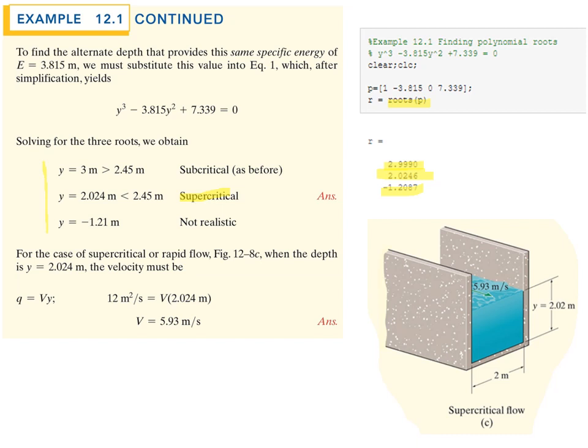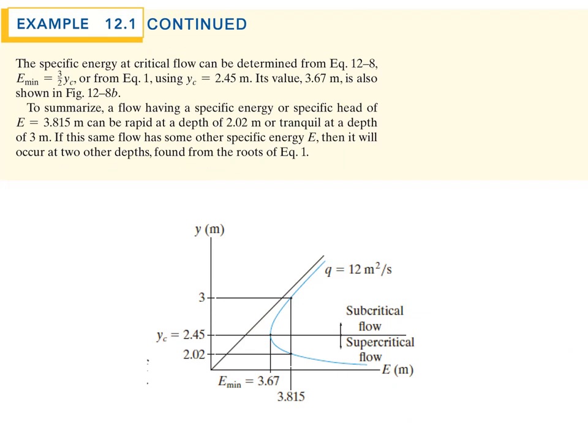We can also solve for the velocity at the alternate depth of 2.02 meters. Since small q stays the same, solving for V gives 5.93 meters per second. You can also solve this type of problem on your calculator using a cubic root solver or by plotting the equation. The graph summarizes the solution: starting at 3 meters, we found the specific energy, the alternate depth of 2.02 meters with the same energy, and the critical depth of 2.45 meters.